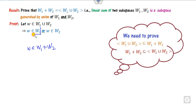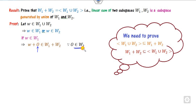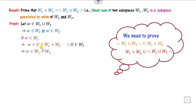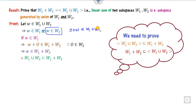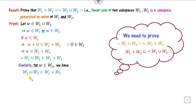That is quite simple. First consider w belonging to w1. Since 0 always belongs to a subspace, we can write this element as w + 0, which belongs to the linear sum. Since w belongs to the union, we can write union belongs to this. Similarly, for the other case we write the value as belonging to w1 plus w2, because 0 also belongs to w1.